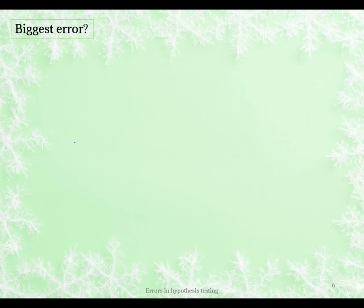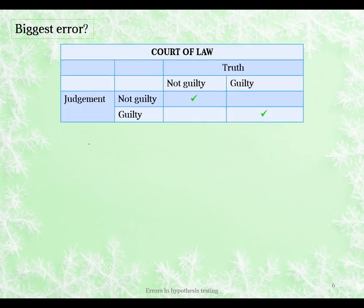So now our question is: what is the biggest error? We know there are two errors and there will always be the possibility of both, but we want to minimize them as much as possible. Going back to the court of law example: is it worse to not send a guilty person to jail (type 2 error) or to send someone who is not guilty to jail (type 1 error)? If we send a person to jail and they're not guilty, that is arguably the worst of the two.